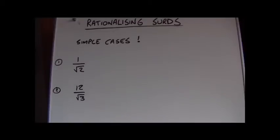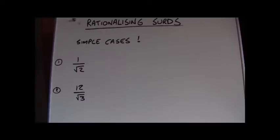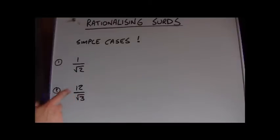The reasons for doing this are kind of historical — they go back to a time when people had to calculate these things with pen and paper, and it was easier to do divisions of numbers when the surd was not on the bottom of a fraction. So rationalizing it is changing the bottom of the fraction into a rational number.